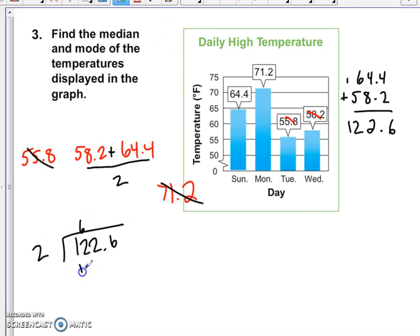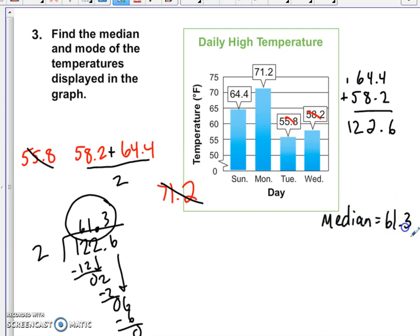2 goes into 12 six times with no remainder. 2 goes into 2 one time with no remainder. And 2 goes into 6 three times with no remainder. So when we bring our decimal up, we find that our median value is 61 and 3 tenths degrees.